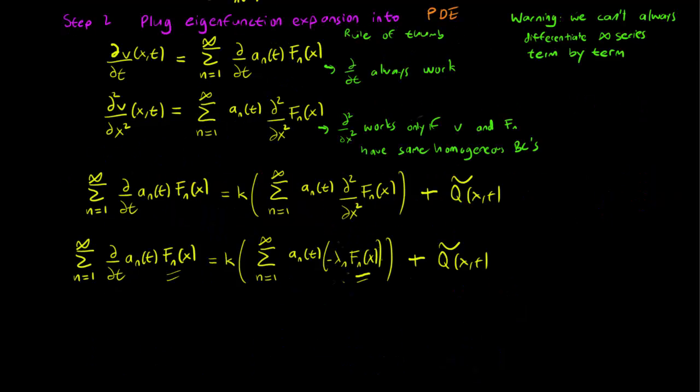But then we can notice that this term and this term have a common factor, the sum, the common sum. So if you move it to the left, we get F_n(x), the sum of F_n(x), where n equals 1 to infinity, of the derivative of a_n(t) plus lambda_n*K*a_n(t). Remember this is just moving both terms to the left and factoring out the sum and the F_n(x) equal to Q tilde (x,t). Usually in these cases Q tilde (x,t) is a piecewise function.